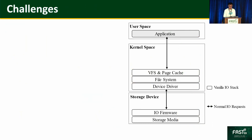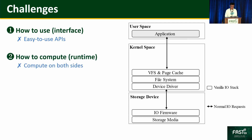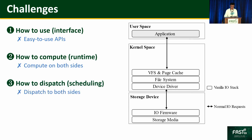To answer the question, we identify three challenges to build a unified I/O stack. The picture shows a vanilla I/O stack, including the host-side user space, kernel space, and the storage device. First, how to use — a vanilla I/O stack has no easy-to-use APIs for computational storage, because it only has read and write interfaces such as pread and pwrite. Second, how to compute — a vanilla I/O stack is designed for storage with no computation runtime. Third, how to dispatch — a vanilla I/O stack schedules only I/O requests, and scheduling becomes much more complicated with computation.